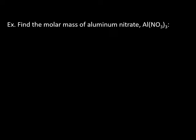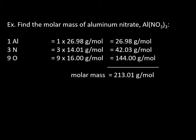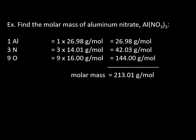Now how do we deal with compounds? It's not too far a stretch because compounds are made up of elements — we just need to figure out how many of each atom are in the compound. For example, the molar mass of aluminum nitrate Al(NO₃)₃: one aluminum at 26.98 g/mol, three nitrogens each at 14.01 g/mol, and nine oxygens giving 144 g/mol. Adding them all up gives a total of 213.01 g/mol. Remember with addition we keep the number of decimal places. Note that your periodic table may have three decimal places, giving a slightly more precise answer.